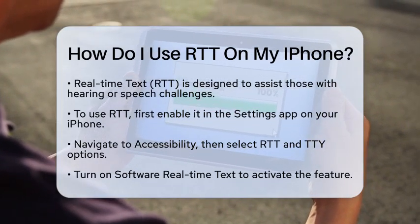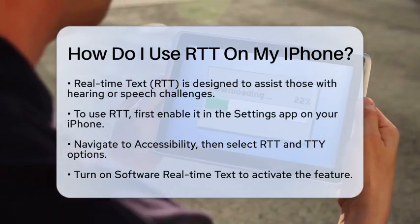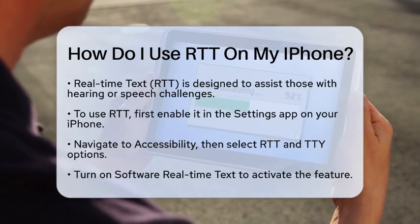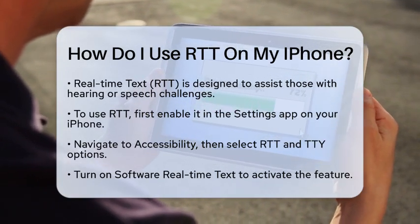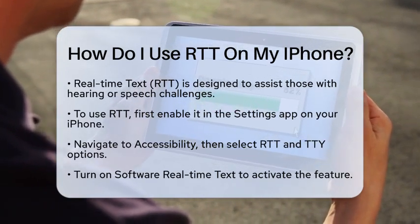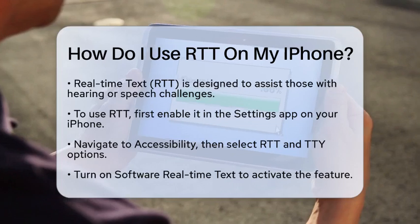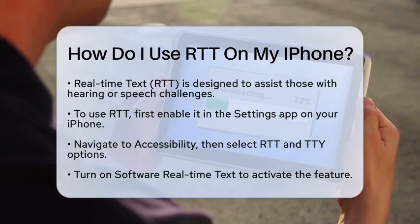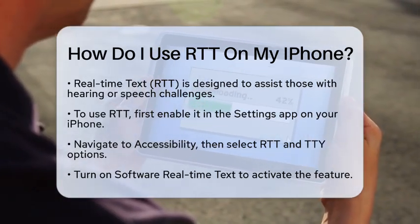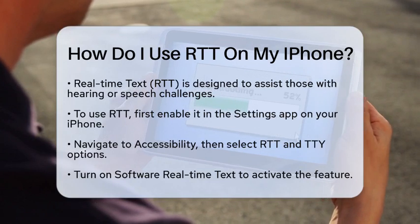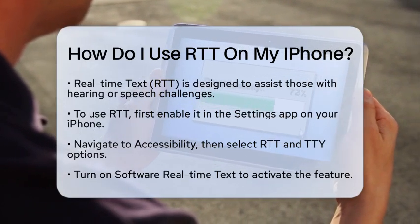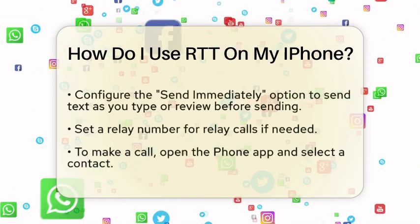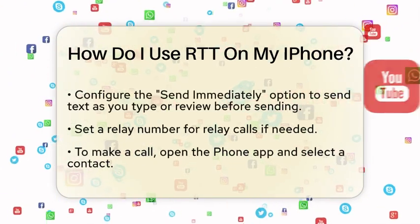First, real-time text allows you to send text during phone calls, just like instant messaging. To get started, you need to enable this feature on your device. Open the Settings app on your iPhone. From there, navigate to Accessibility, then find RTT and TDY. Once you are in that menu, turn on Software Real-Time Text.